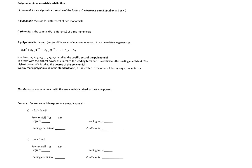Polynomials are algebraic expressions that are sums and/or differences of monomials. A monomial is an expression of the form ax to the n, where a is a real number, x is a variable, and n is an integer greater than or equal to zero. For example, 2x cubed, square root of 5x, or two-thirds are all monomials.